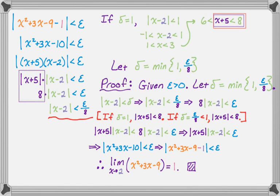I definitely suggest trying this again on your own. The weirdest part is that step where you say: what if delta equals 1? We have to do something to get rid of |x + 5| because it's messing up the inequality we want to set up. So we make that assumption, do our work, and then reverse the process. I hope you found this helpful, and good luck.